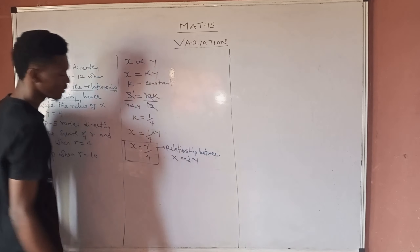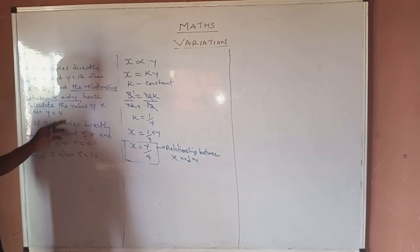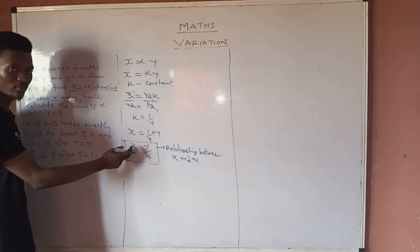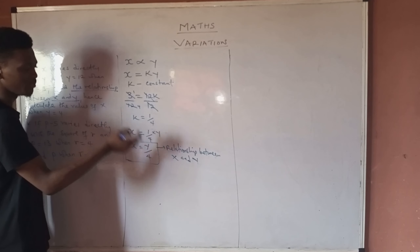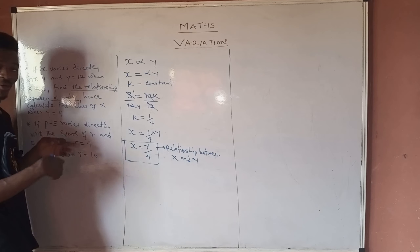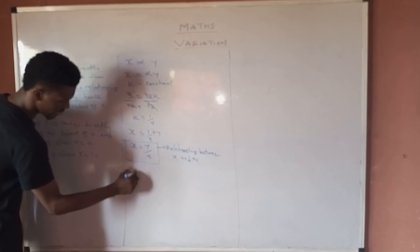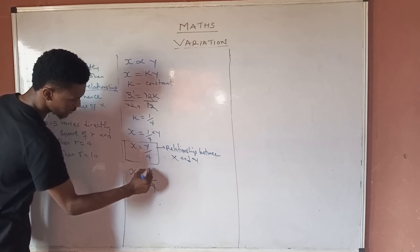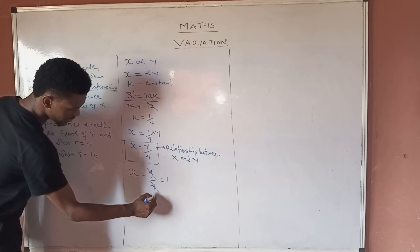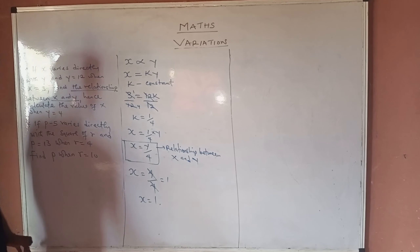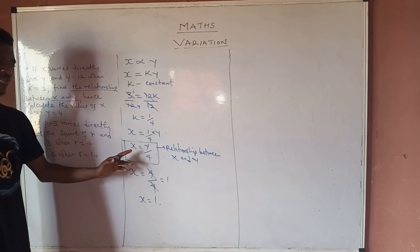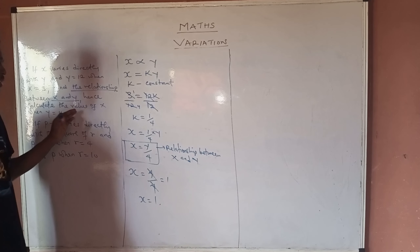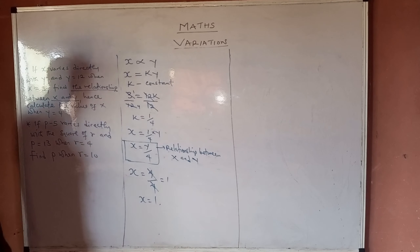Hence, calculate the value of x when y = 4. Using the formula x = y/4, we substitute y = 4: x = 4/4 = 1. So the value of x is 1. As long as you have the formula showing the relationship between the two quantities, you can easily answer any related question.